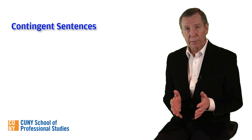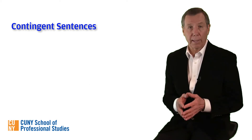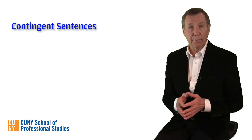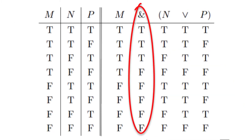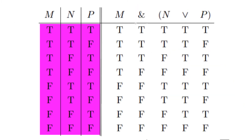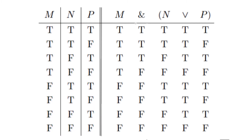Here's the complete truth table with all our values filled in and the column for the main connective circled. Notice the way we've arrayed the table to the left of the double line. In the column immediately to the left, we alternate T and F. In the next column, we go by twos: T, T, F, F, T, T, F, F.